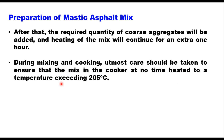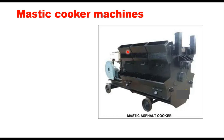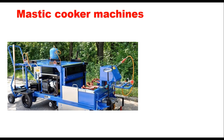During mixing and cooking, care should be taken to ensure that the mix in the cooker is at no time heated to a temperature exceeding 205 degrees centigrade. There are simple cookers with bins for coarse aggregate, fine aggregate, filler and bitumen, as well as fully computerized mastic cooker machines where all operations are controlled by a computer.